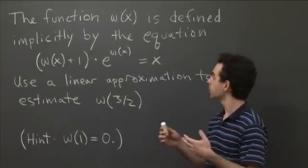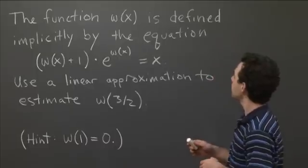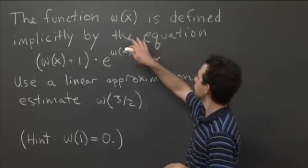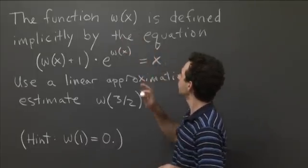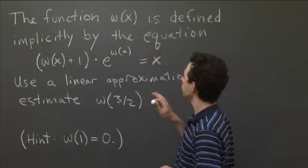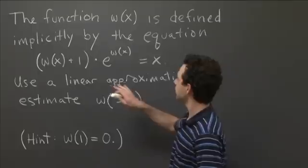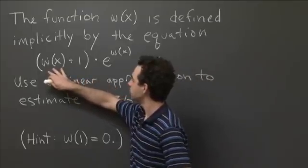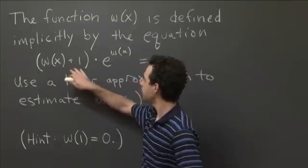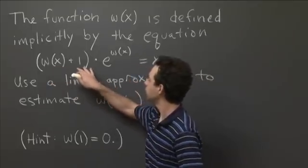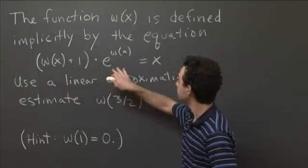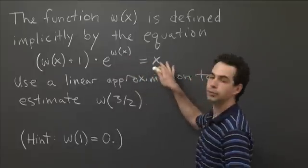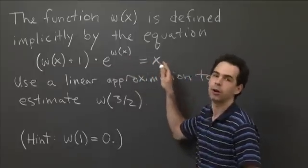For example, this function w(x) written on the board is defined implicitly by the equation: (w(x) + 1) · e^(w(x)) = x, for all x.